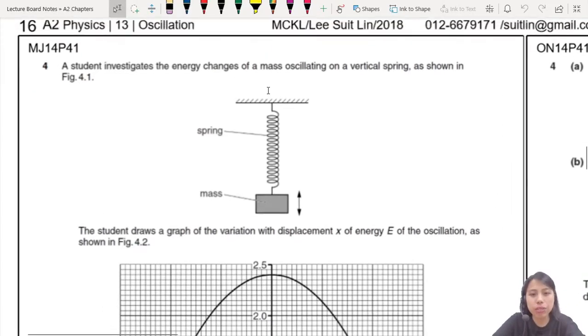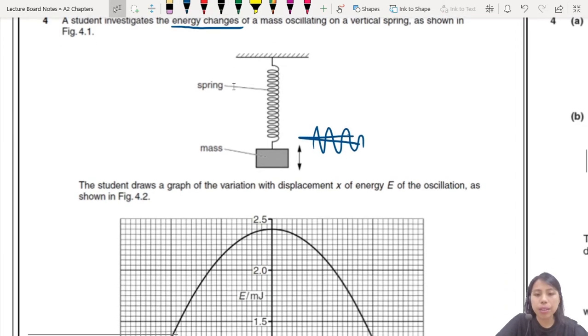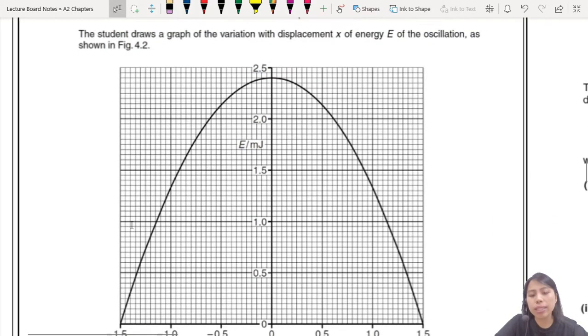So a student investigates the energy changes of a mass oscillating on a vertical spring, so it's going to go boing, boing, boing, like that.